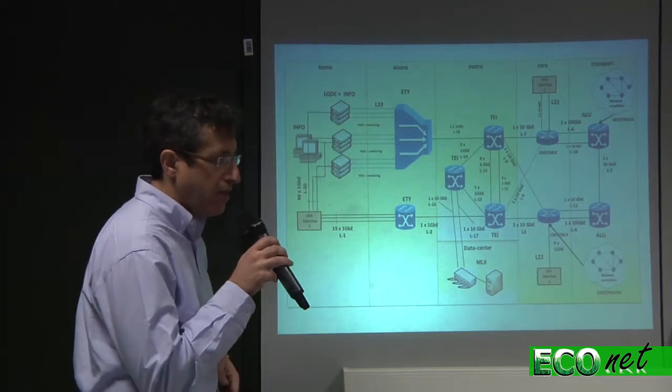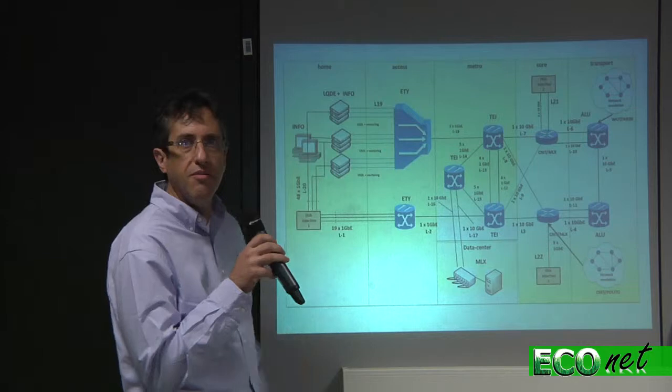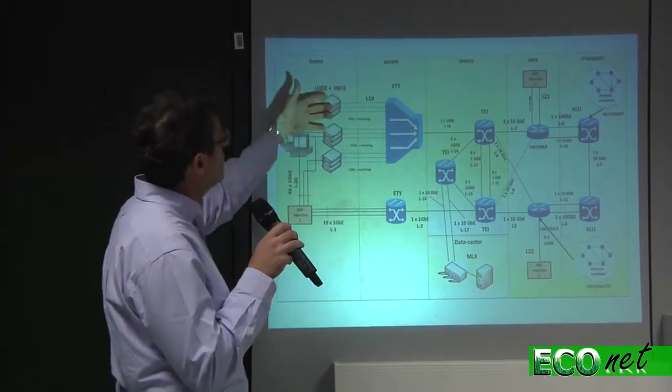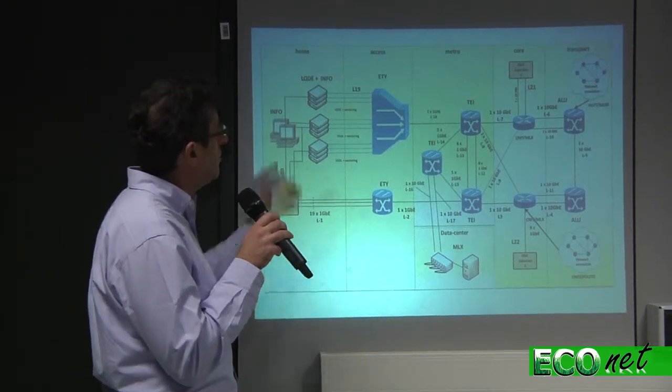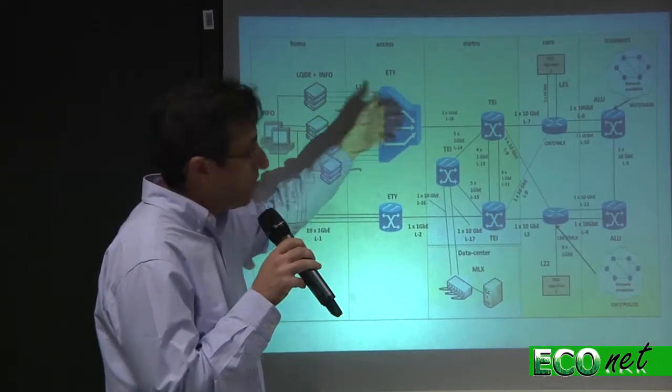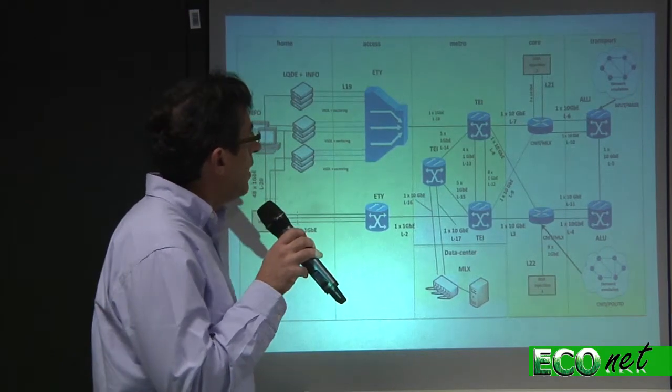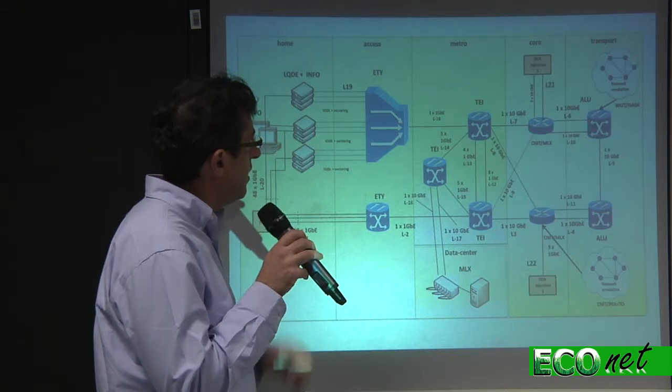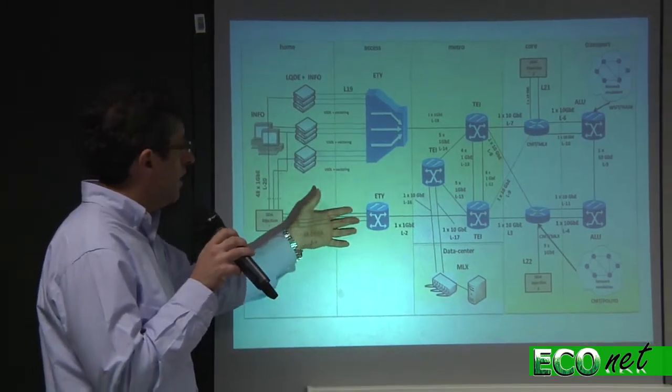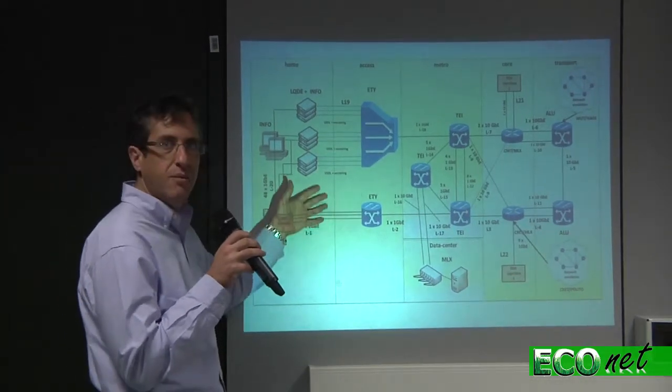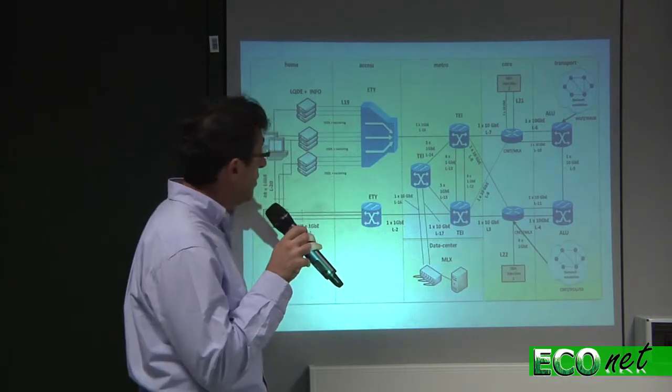What we can see here is that we have this VDSL DSLAM connected to Lantik home gateway from the user side, and from the network side it is connected to the Ericsson equipment through a gigabit Ethernet port. Here several gigabit Ethernet ports are connected to a test equipment and towards the Ericsson equipment.